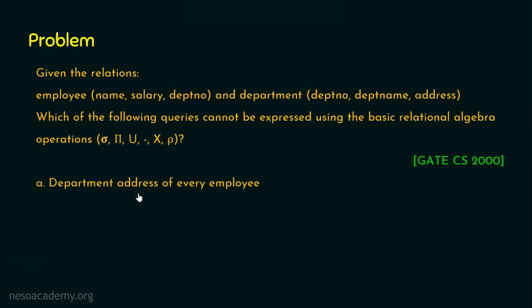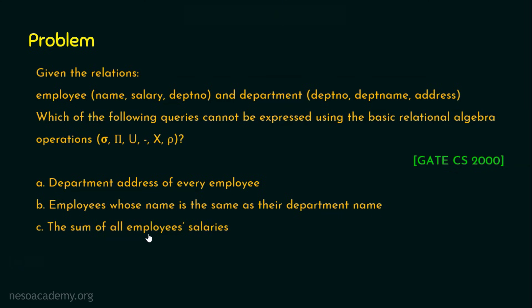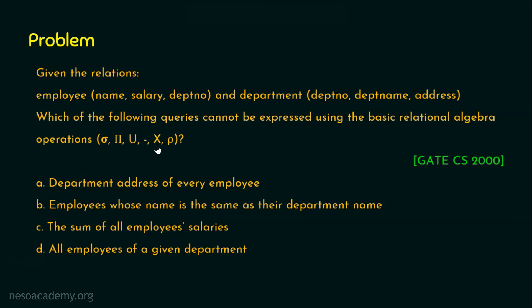The options are: option A - department address of every employee; option B - employees whose name is the same as their department name; option C - the sum of all employees' salaries; and option D - all employees of a given department. We can easily answer this question because the sum operator is not available in the basic relational algebra operations. The basic operations include select, project, union, set difference, Cartesian product, and rename. There is no exclusive operator for performing summation, and hence option C is the right answer.